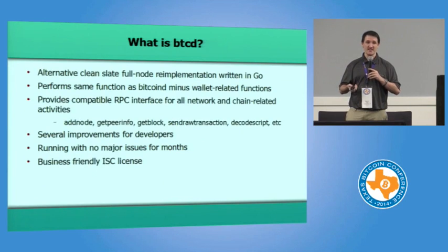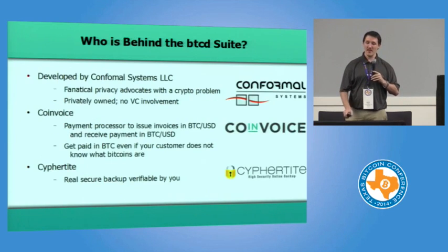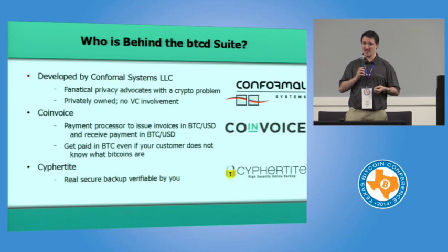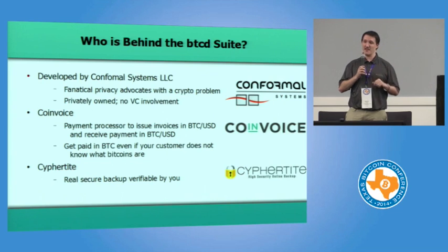The license is ISC — similar to BSD, very business-friendly. You can use it in commercial code with no fees. Conformal Systems is the company behind it. We have a payment processing service called Coinvoice, which runs on top of BTCD. It's one of the main reasons we originally worked on it — we found we couldn't do some things we needed with the existing client. We also wanted to improve the architecture of the entire network to build a robust system for our business.